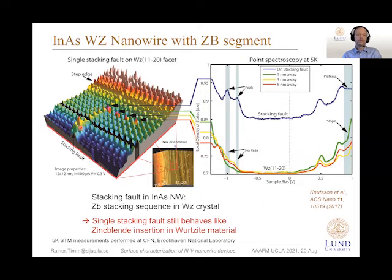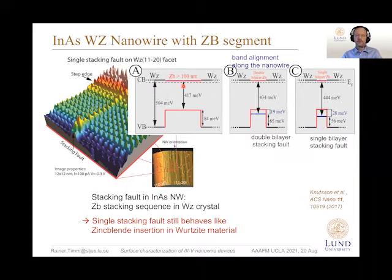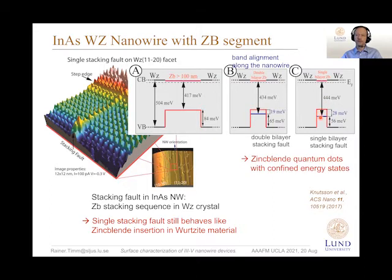Since this is such a small insertion, we can even see the quantum confinement effects. If we compare the apparent band gap for a larger zinc blende segment in wurtzite — for InAs material we have flat band conditions of the conduction band — and then go to this very small insertion, the single bilayer stacking fault, we see an apparently larger band gap due to quantum confinement in the valence band area.